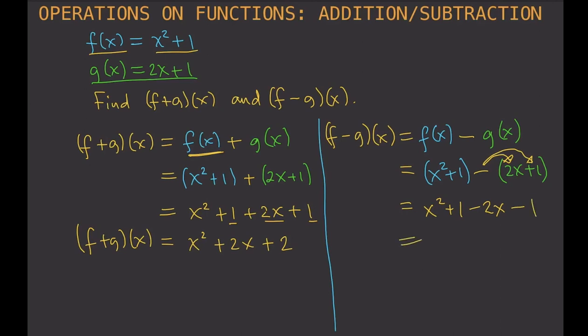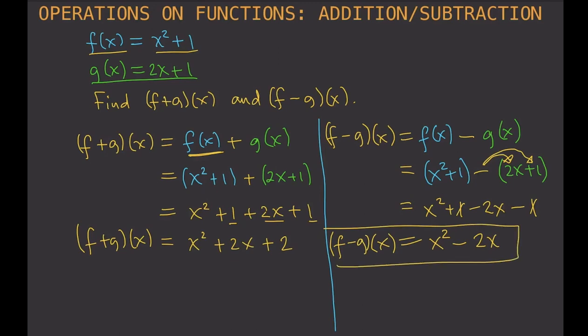That gives us x² + 1 − 1 − 2x. The +1 and −1 cancel each other out, leaving us with x² − 2x. That is f minus g of x. So that's how you perform addition and subtraction on functions. See you in the next video.